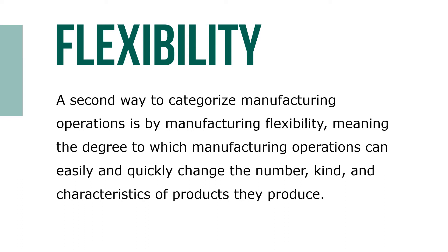A second way to categorize manufacturing operations is by manufacturing flexibility, meaning the degree to which manufacturing operations can easily and quickly change the number, kind, and characteristics of products it produces. Flexibility allows companies to respond quickly to changes in the marketplace — in response to competitors and customers — and to reduce the lead time between ordering and final delivery of products.